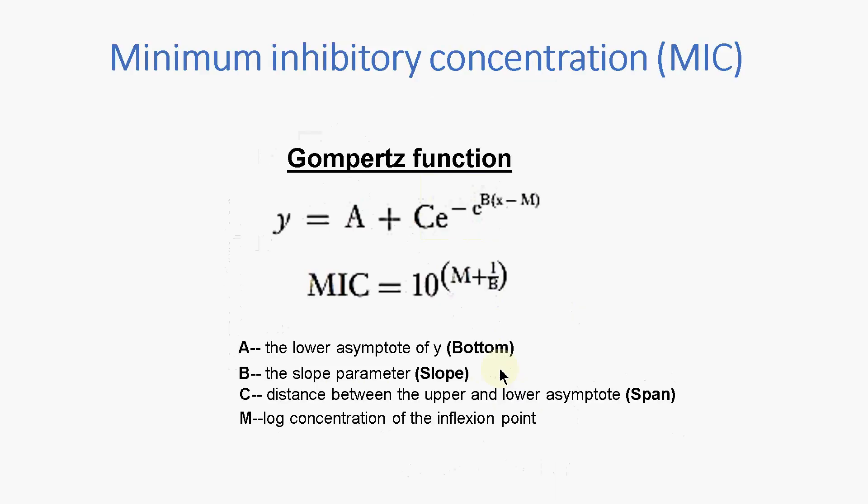A set of equations referred to as the Gompertz function describe the relationship between the MIC, the Y value which is the bacterial number, the X which is log concentration, as well as the slope, bottom, span, and the log concentration of the inflection point of the sigmoid curve.